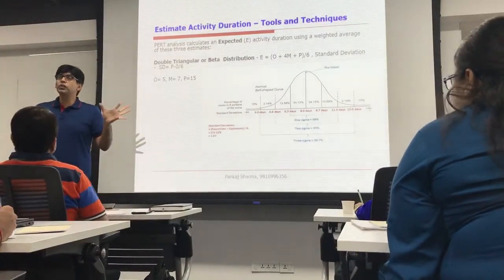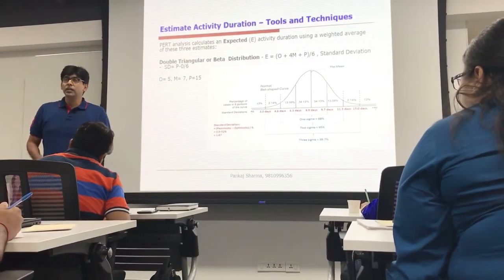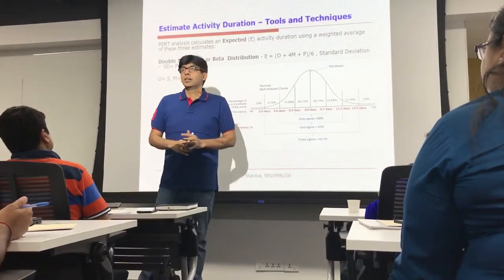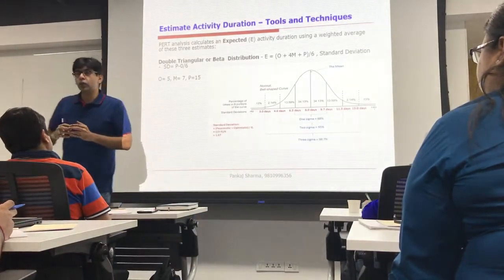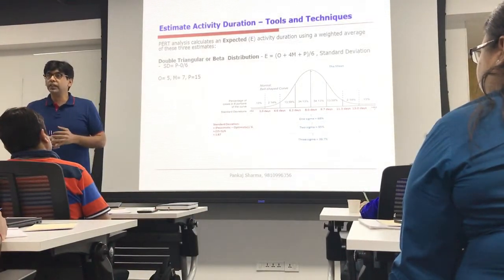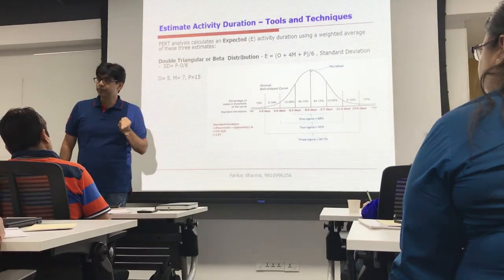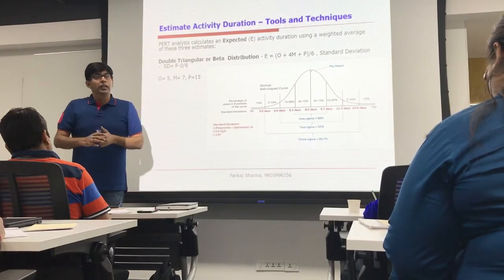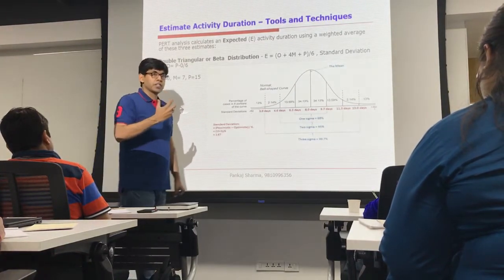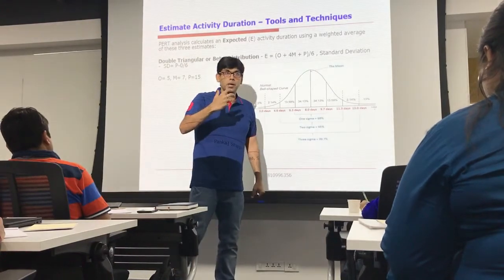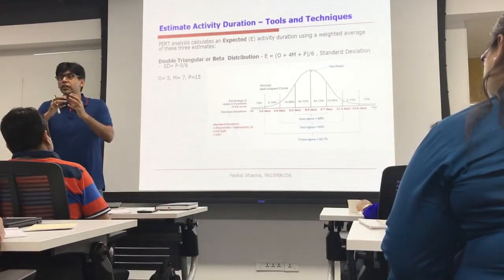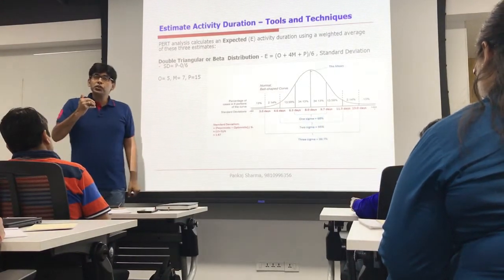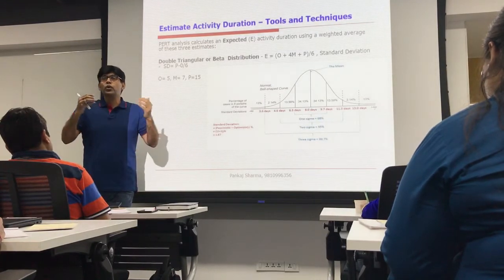Three-point estimation is one of the duration estimating techniques. The technique is based on historical data. It can be applied at the overall project level as well as at the activity level. Let's say there are some projects executed by your organization in the past and you have historical data corresponding to those projects — based on the historical data on time or cost.